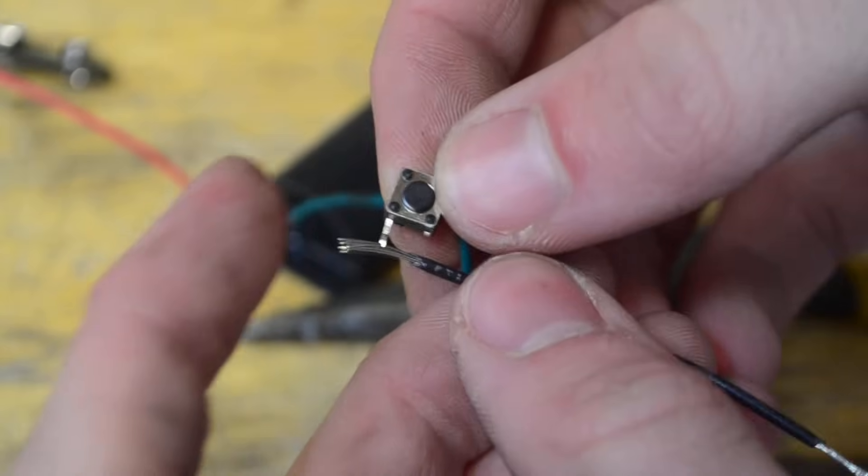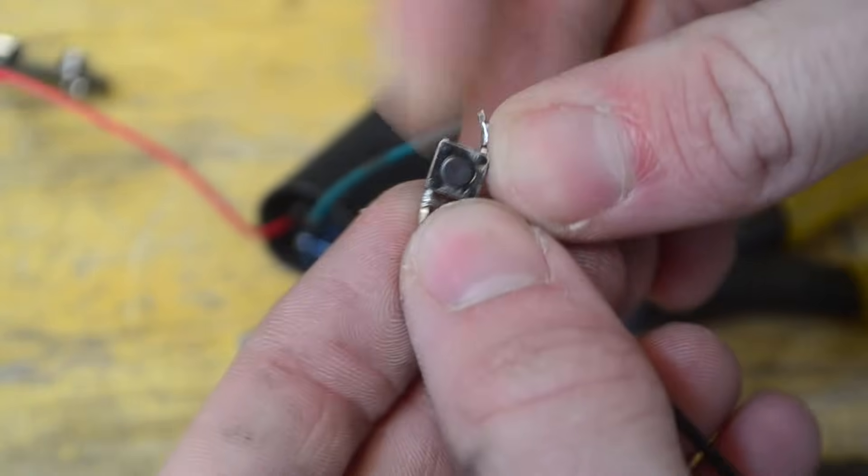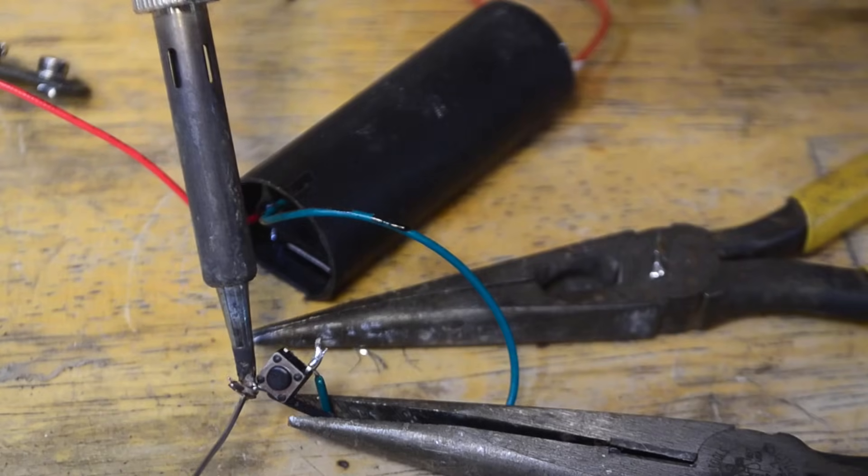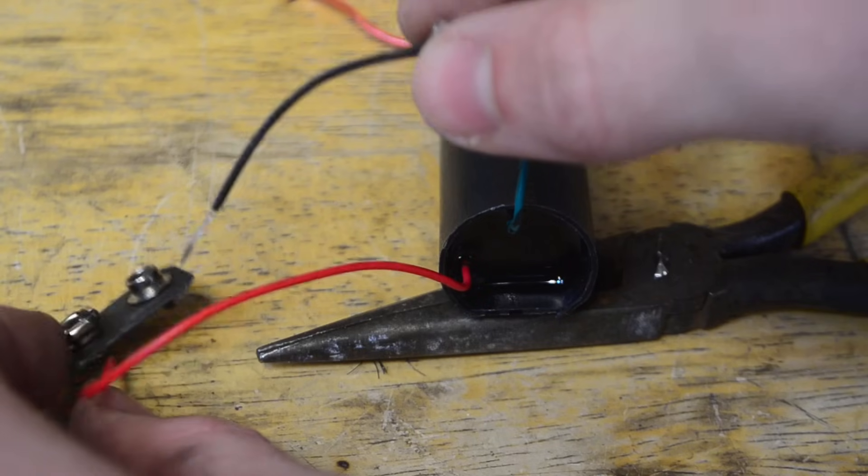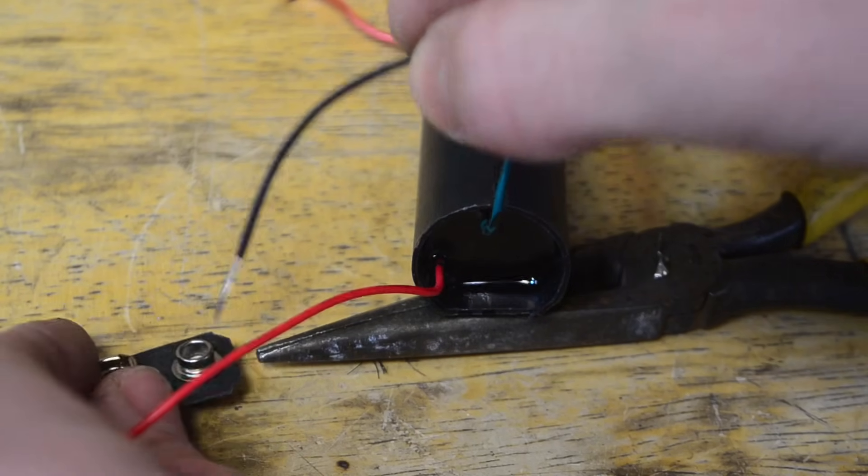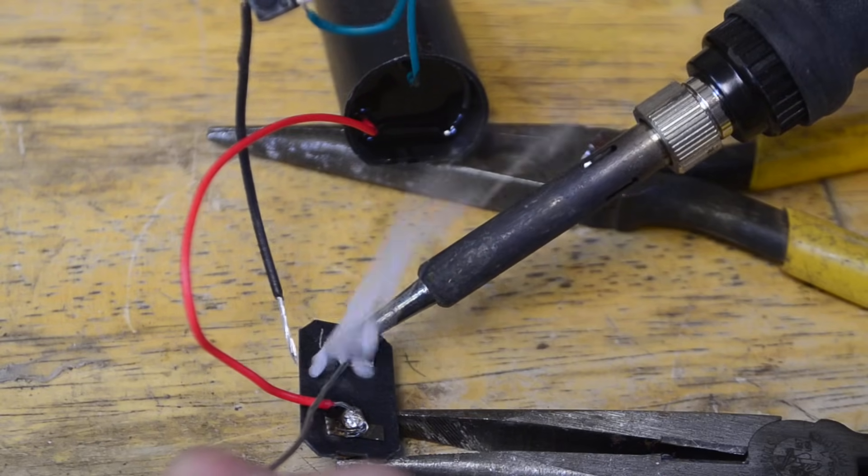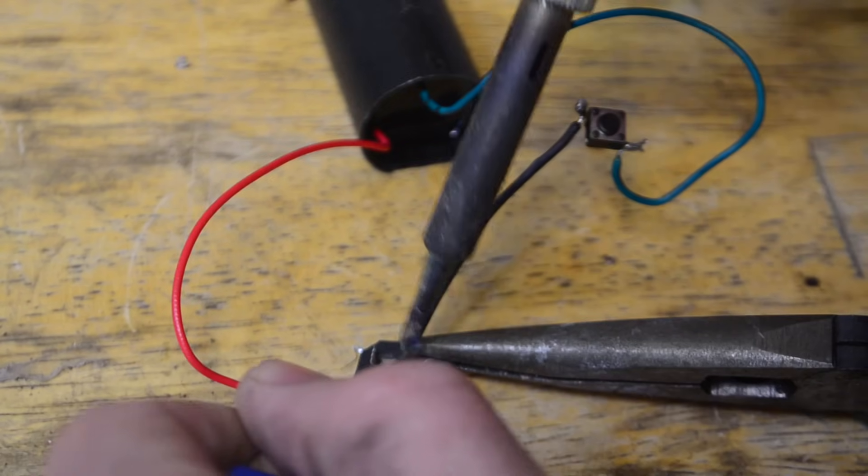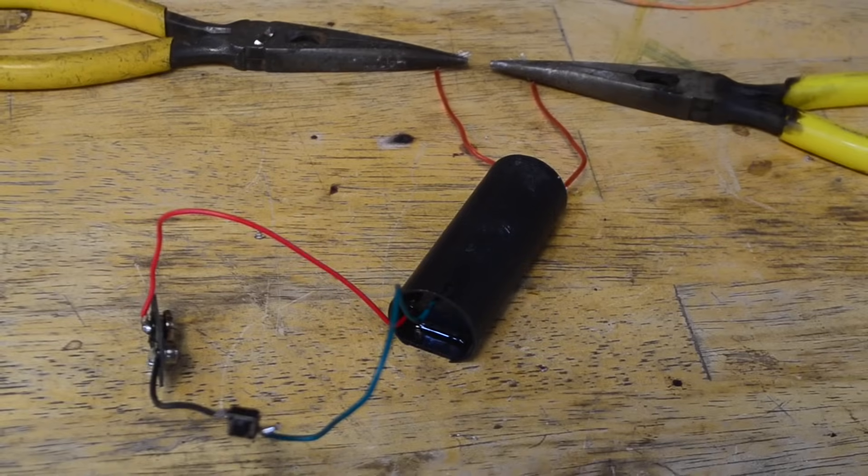On the other end of this momentary switch, I'm going to attach this little strand of black wire I have lying around. Just as before, we're going to solder this into place. Now the other end of this black wire is going to be connected onto this negative tab of the 9-volt battery terminal. We'll add a pad of solder and then solder on the black wire. As for the circuitry, that's all we need.